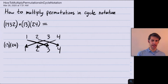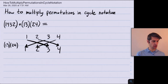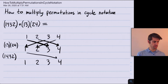This composition notation means: first do this function and then do this function. So what happens next is we apply (1, 4, 3, 2) to the elements 1, 2, 3, and 4. It sends 1 to 4, 4 to 3, 3 to 2, and 2 back to 1.